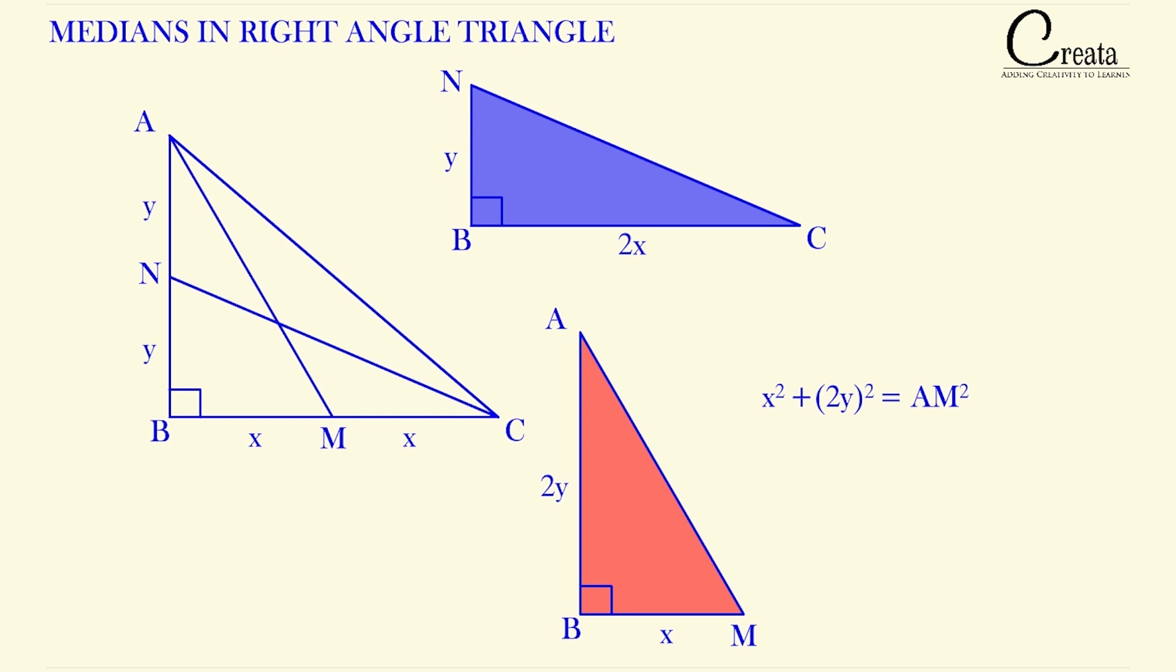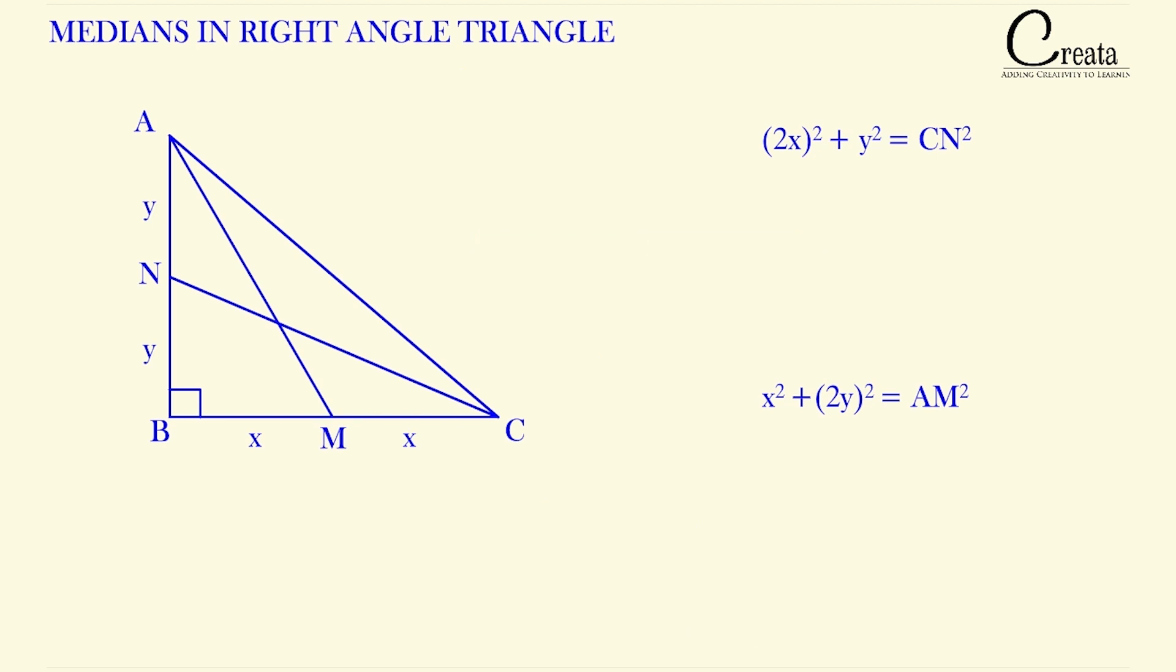Similarly, for the triangle NBC, we got 2X square plus Y square is equal to CN square. Here BC will be X plus X, that is 2X. Let's add both these equations. We got 5 times X square plus Y square is equal to AM square plus CN square.